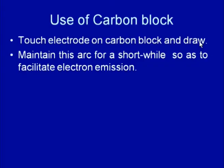In the carbon block method, the electrode is first brought into contact with the carbon block and then drawn apart. Once drawn apart, the heat is generated and the temperature of the electrode tip increases, which thereafter helps in initiating the arc easily at another location. Once the electrode is brought into contact with the carbon block and drawn away, this maintains the arc for a short while so that the heat generated facilitates electron emission.